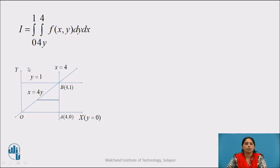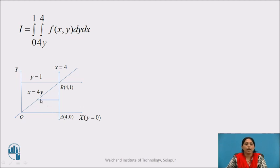Come back, let us see the solution. I is given as integration from 0 to 1, integration from 4y to 4, f(x, y) dy dx. The inner integral has limits 4y to 4, which are expressed as a function of y, so these are the limits of x. As these are the limits of x, the initial strip is parallel to the x-axis. The outer integral has limits 0 to 1, which are the limits of y. So the region of integration lies between x equals to 4y to x equals to 4, and y equal to 0 to y equal to 1, giving region OAB.